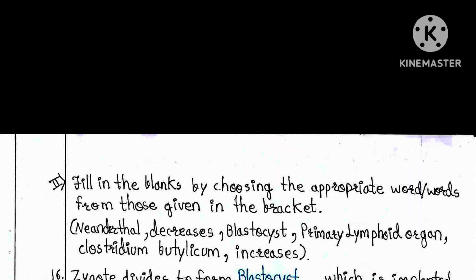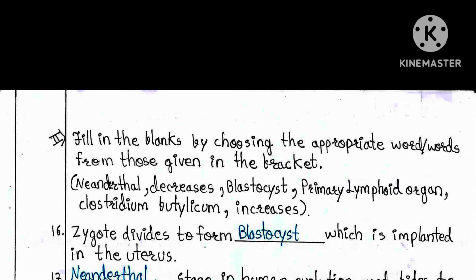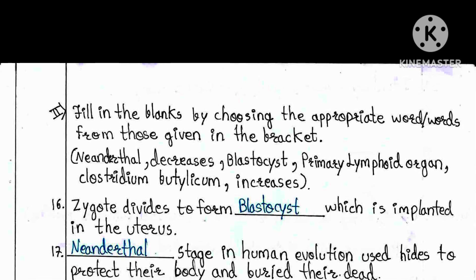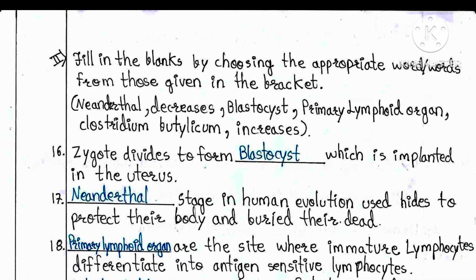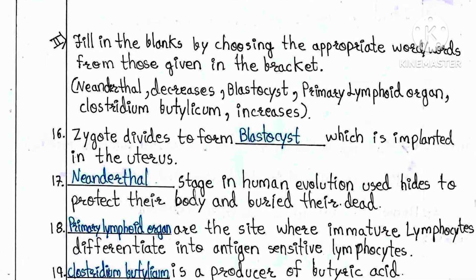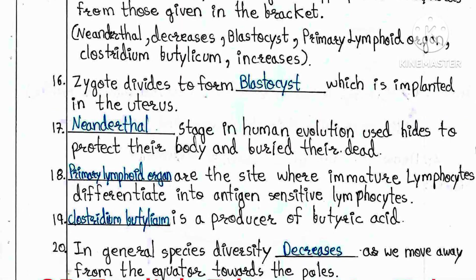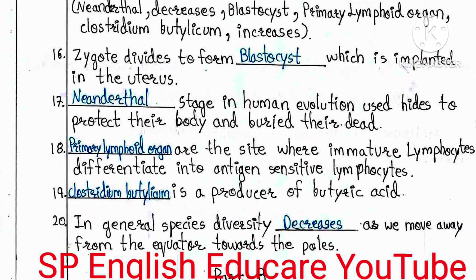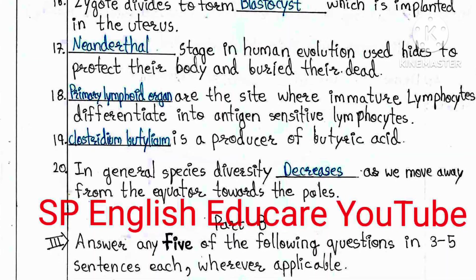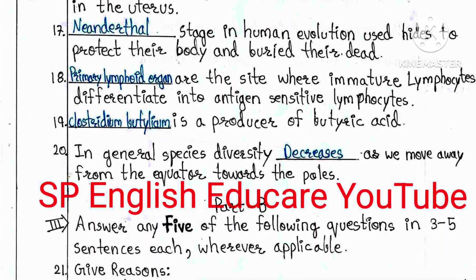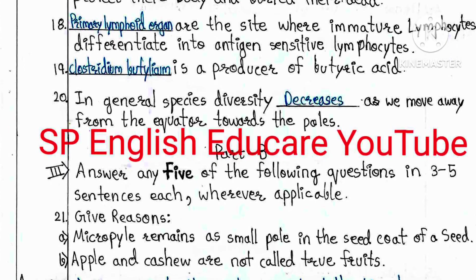Part A, Bit 2: Fill in the blanks by choosing the appropriate word from the bracket. Q16: Zygote divides to form ___ which is implanted in the uterus. Answer: blastocyst. Q17: ___ stage in human evolution used hides to protect their body and buried their dead. Answer: Neanderthal. Q18: ___ are the site where immature lymphocytes differentiate into antigen-sensitive lymphocytes. Answer: primary lymphoid organs. Q19: ___ is a producer of butyric acid. Answer: Clostridium butylicum. Q20: In general, species diversity ___ as we move away from the equator towards the poles. Answer: decreases.